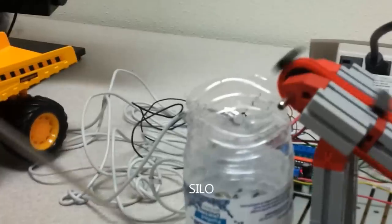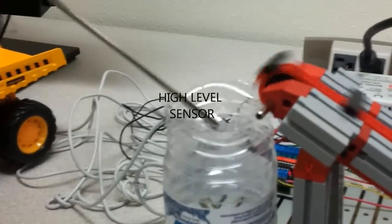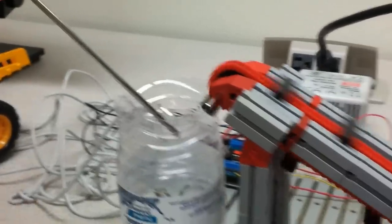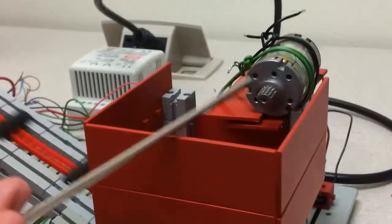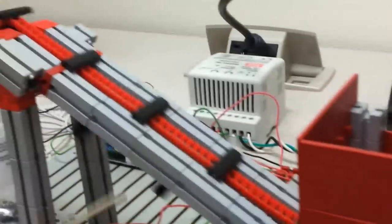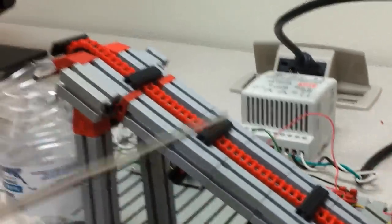When our silo is filled, then the proximity sensor will actuate. When it is actuated, it turns off the crusher motor. After five seconds, it will stop the conveyor.